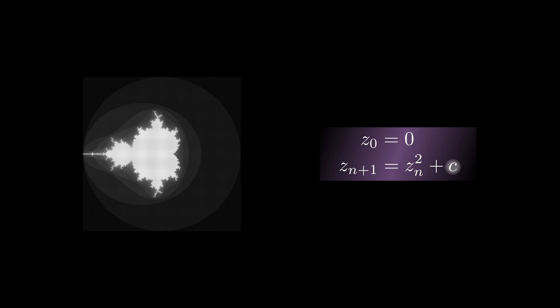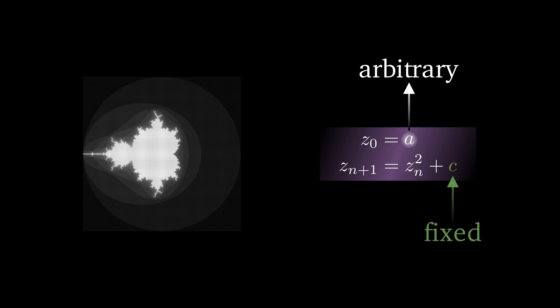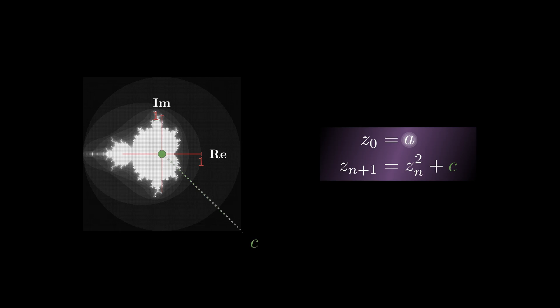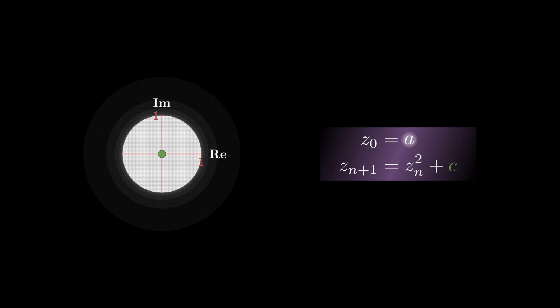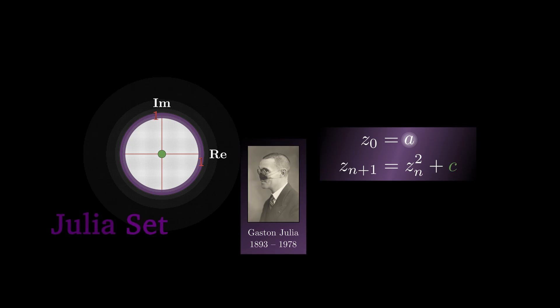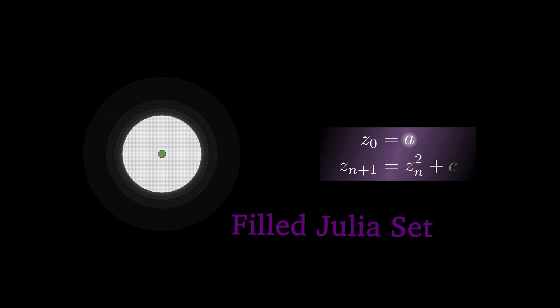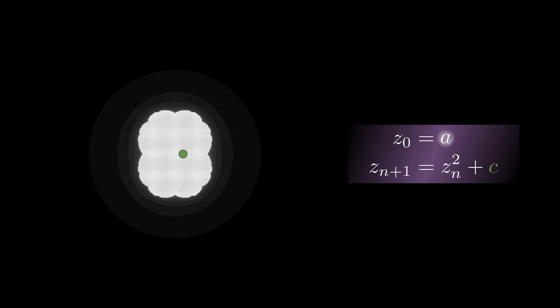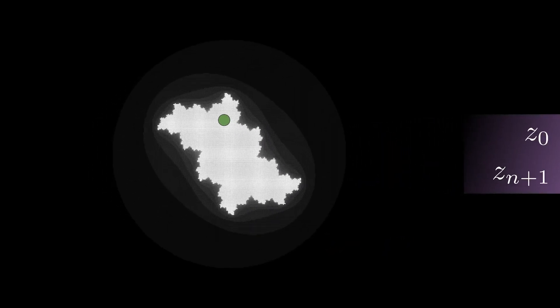Now, let us change the starting point from 0 to A, where A is an arbitrary complex number, and fix the number C. For every fixed complex number C, we can plot all points A for which the sequence stays bounded. If C is 0, we obtain the set of all complex numbers whose magnitude is smaller or equal to 1. The points with magnitude exactly 1 describe the edge of the set of starting points for which the sequence stays bounded. Such a set is known as a Julia set, named after the mathematician Gaston Julia. What you are currently looking at is a filled Julia set, because the interior is also colored white, not just the boundary.